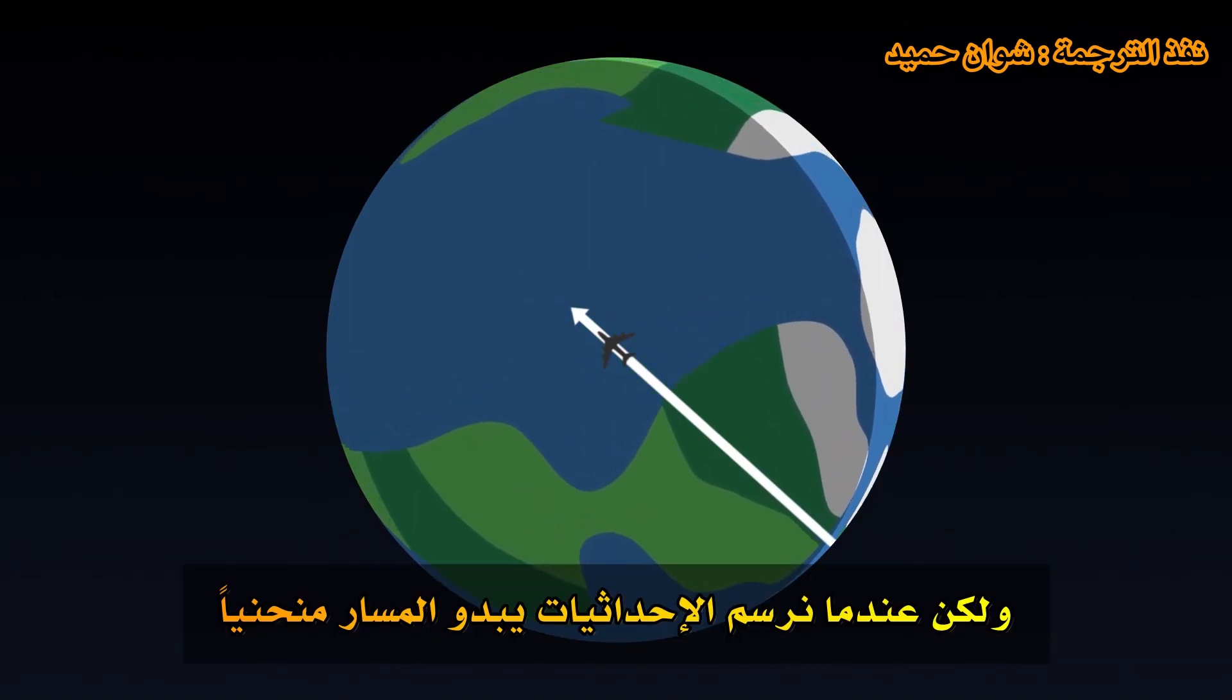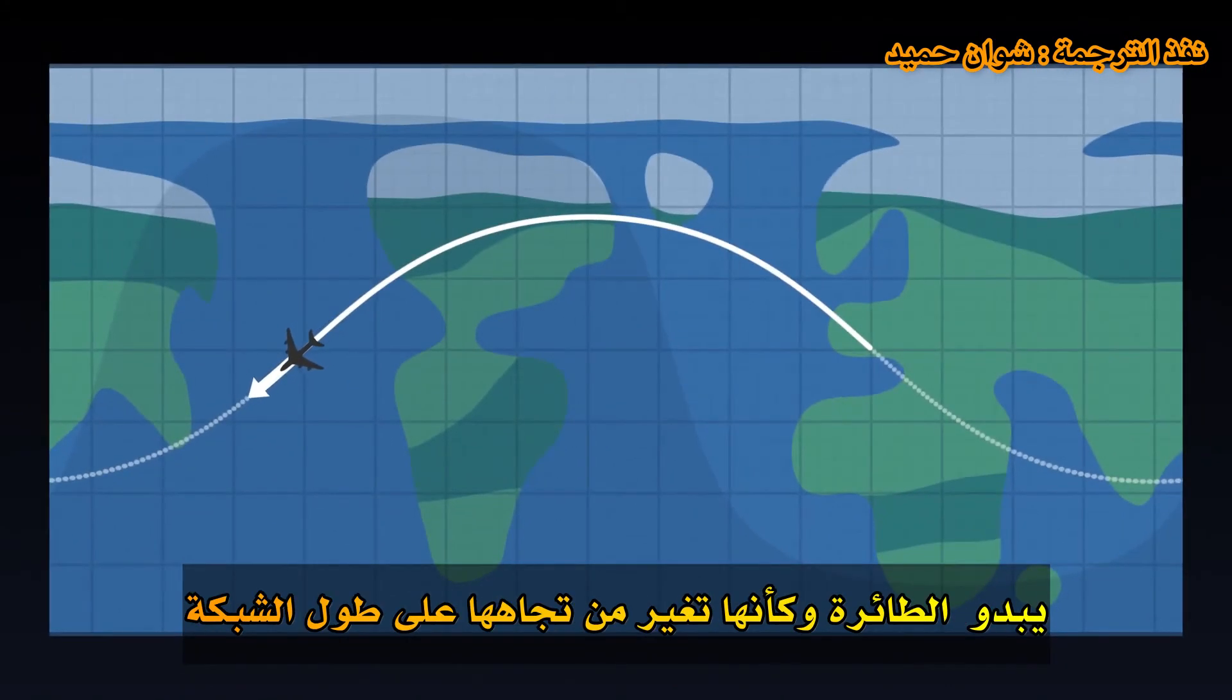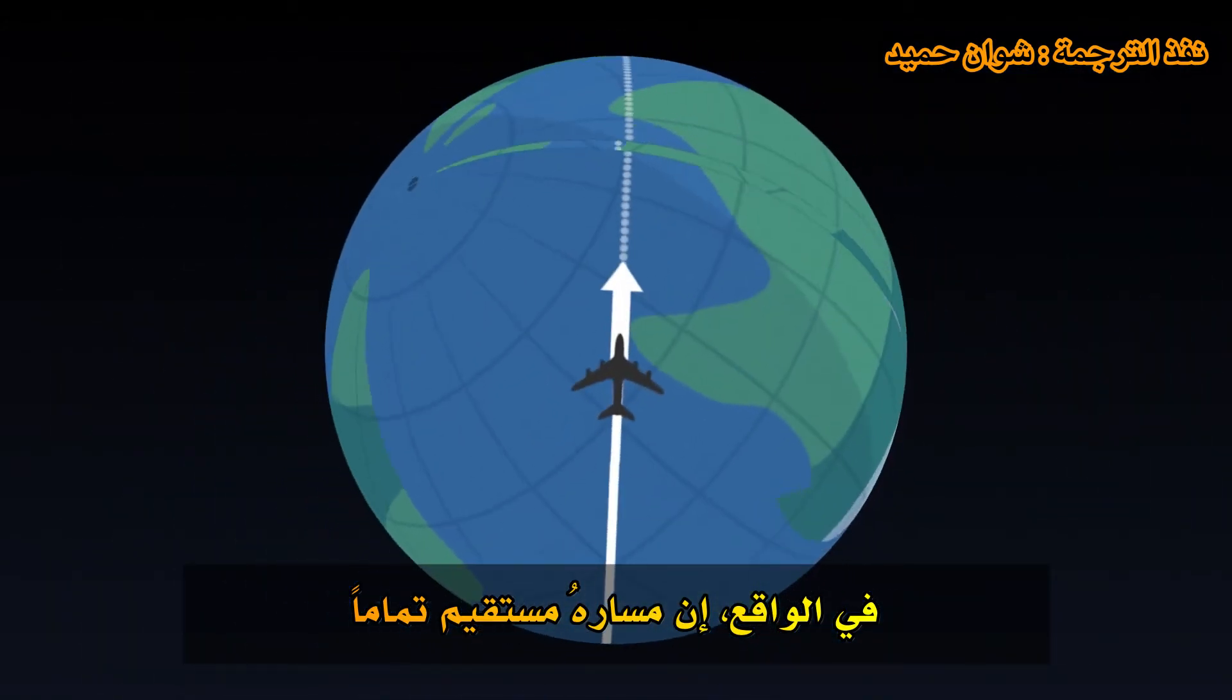But when we plot the coordinates, the trajectory seems curved. The airplane seems to change orientation along the grid. In reality, its trajectory is perfectly straight.